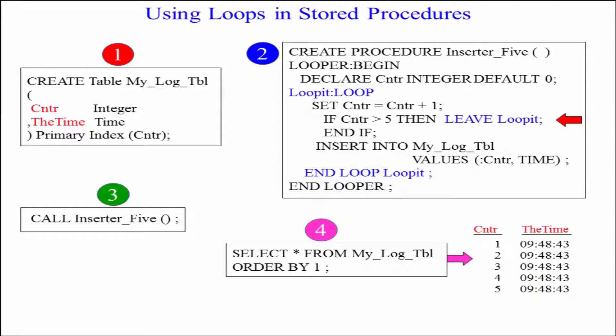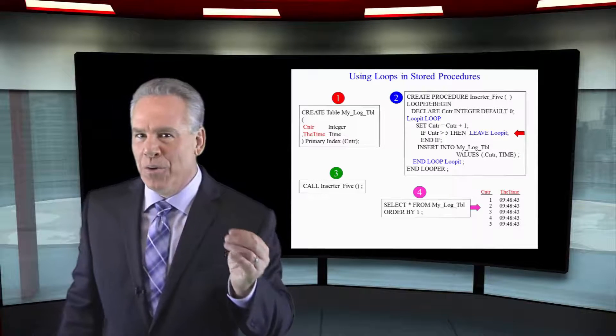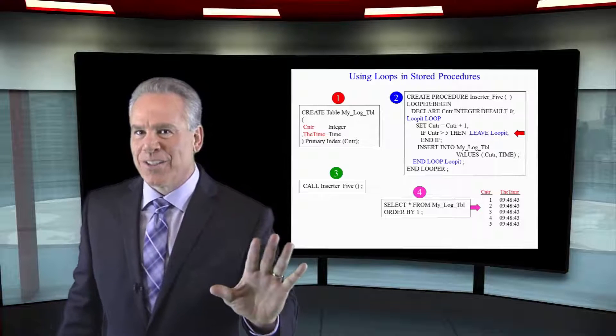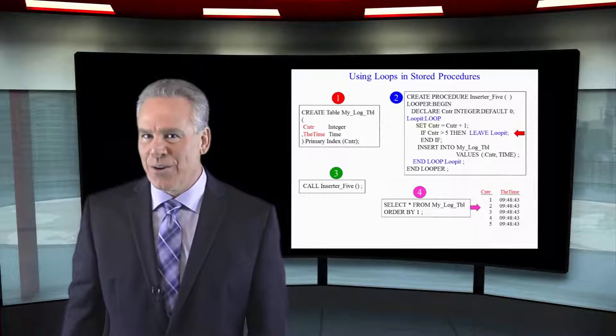Now, let me set you up here. First of all, I created a table called my log table as example number one because I'm going to insert some rows into that. The table must exist. Sometimes I've created stored procedures with derived tables or volatile tables in them, and when I compiled them, they said those tables don't exist. Can't do it. You have to have a permanent table or a global temporary table that you insert select into. So I have created the table as a permanent table because we're going to insert into it.